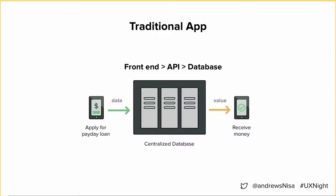A traditional app uses HTML, CSS, and JavaScript to render a page, and it grabs details from a database utilizing an API, and it uses a centralized database to transfer that value. For example, let's say you want to pay your rent to your roommate. You open your Venmo app, you send money to your roommate, Venmo sends data to their database, and then sends money to your roommate. While this seems very easy up front, there's a lot of inherent risk involved — if anyone hacks into this database, you and your roommate's information will be exposed.